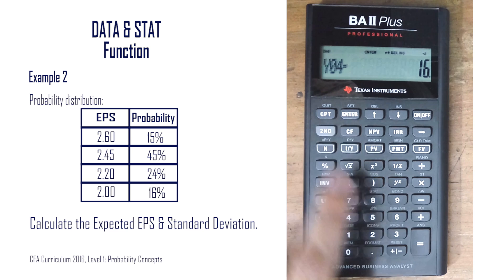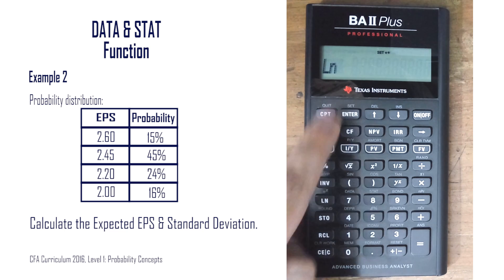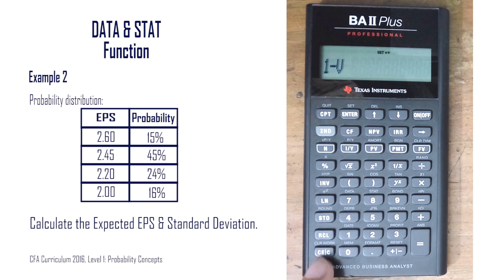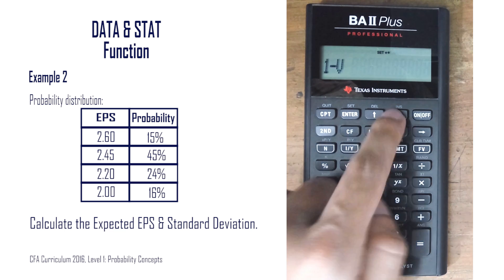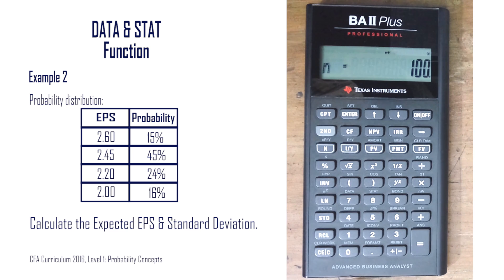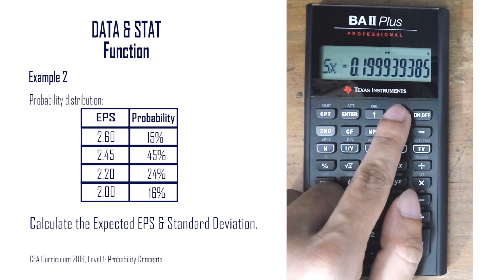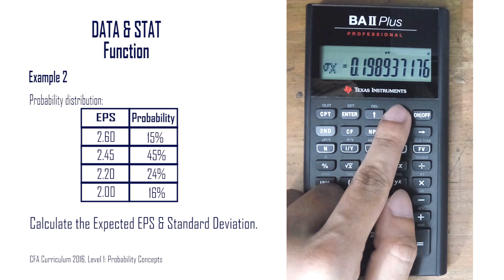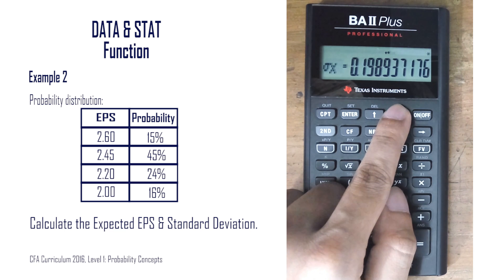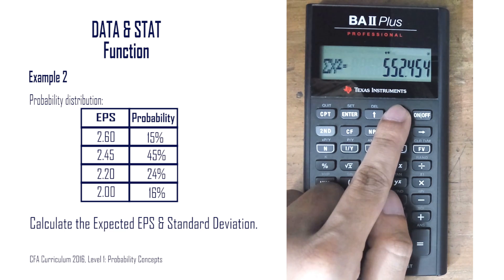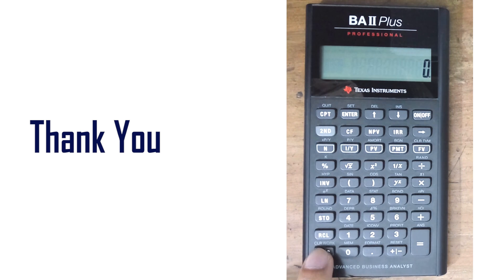Then we go to the stat function by pressing Second 8 and select the one-variable method, 1-V, by changing the mode with Second Enter. Pressing Next gives us the number of data points weighted by probability, which is 100. Then x-bar gives the expected EPS. Sx is the sample standard deviation, and the population standard deviation is 0.196. We also get the sum of x and sum of x squared. This is the common usage of the data and stat functions on the BA2Plus calculator.